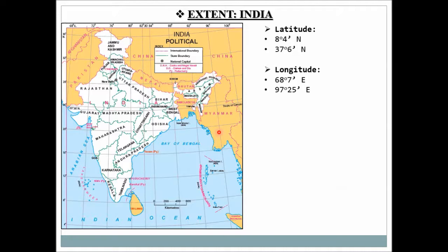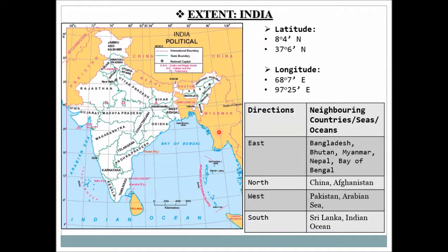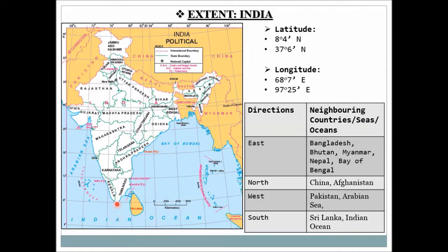India's neighboring countries and oceans: in the eastern direction, India borders Bangladesh, Bhutan, Myanmar, and Nepal, with the Bay of Bengal as the neighboring ocean. In the north, India borders China and Afghanistan — Afghanistan shares a small boundary with India. In the western part, India borders Pakistan and has the Arabian Sea. In the southern part, India borders Sri Lanka and has the Indian Ocean.